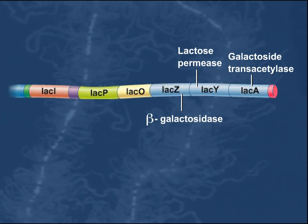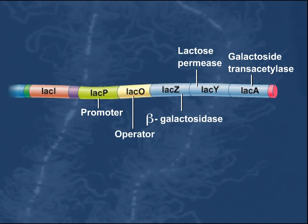The LAC-P region is the promoter that is needed to transcribe the LAC-Z, LAC-Y, and LAC-A genes as a single polycistronic mRNA. The LAC-O region is an operator site that is involved in the transcriptional regulation of the LAC Operon.